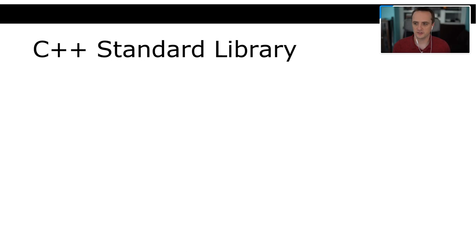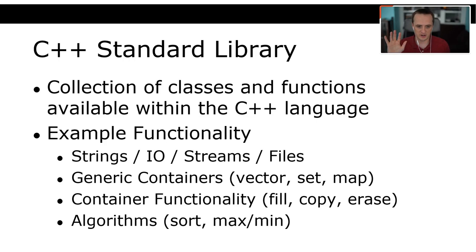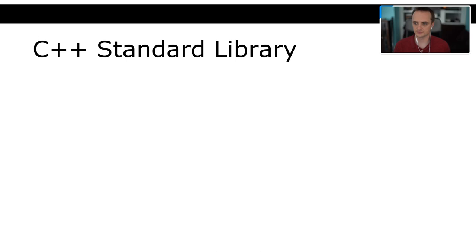The C++ Standard Library, or STL, is a collection of classes and functions available within the language. Some example functionality: you get strings, input-output streams, files, generic containers like vectors, sets, and maps — they all work the same as in Java. You also get container functionality: fill, copy, erase. And as you go into C++11, 17, 20, you get more and more algorithms — you can sort collections, do max and min, and all sorts of cool stuff.